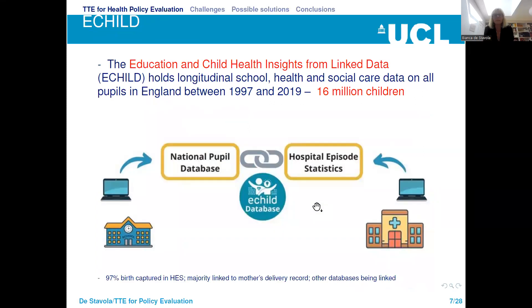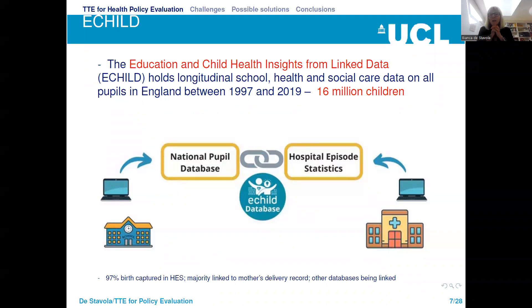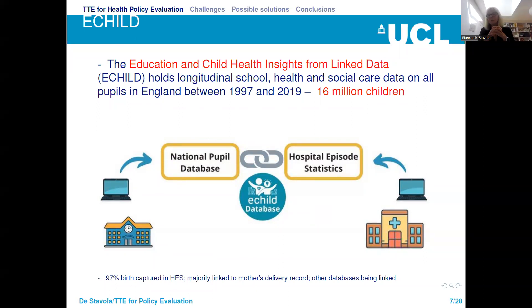e-Child stands for Education and Child Health Insights from Linked Data. It consists of linked records holding longitudinal information on education, health, and social care on all pupils in England between 1997 and 2019 — that's 16 million children. Talking to a Swedish audience, you have had access to this type of data for years. The difference here is that in the UK we don't have a unique identifier as you do, so there are several issues about linkage — linkage is either deterministic or probabilistic and depends on fields such as date of birth, name, area of residence, and sex.